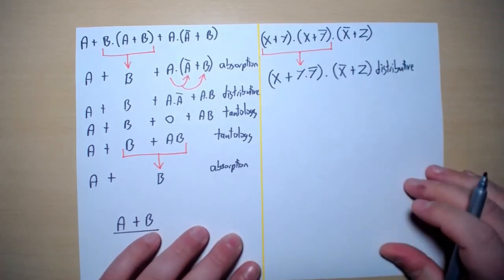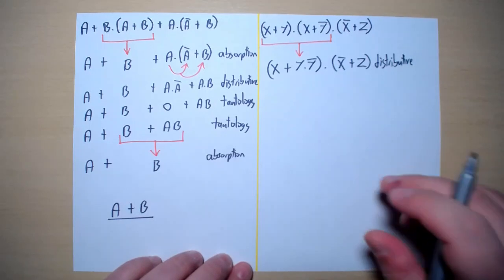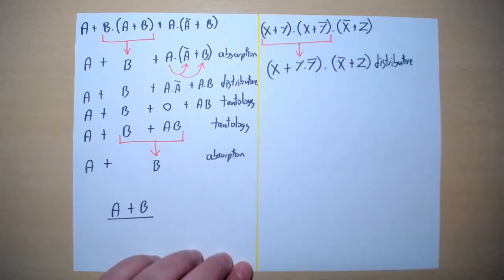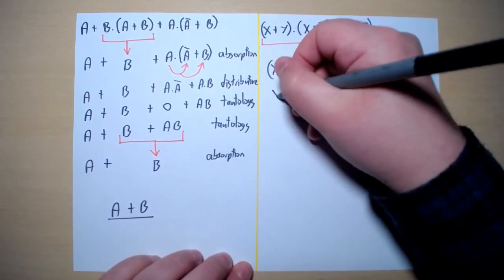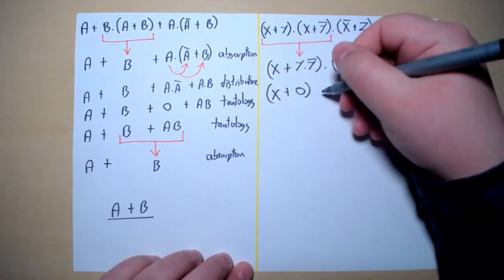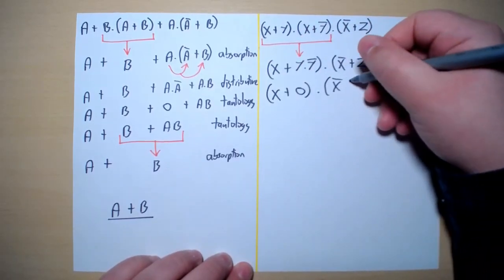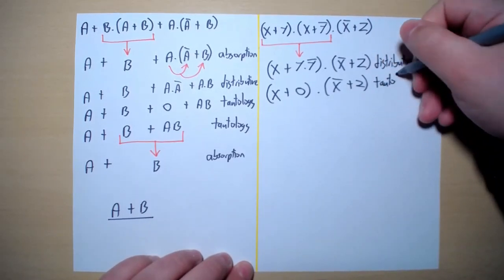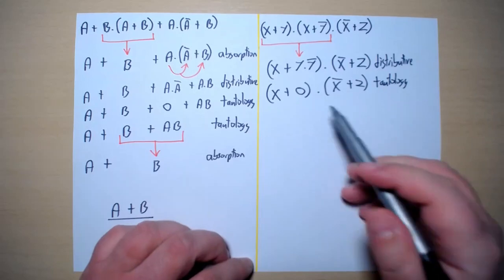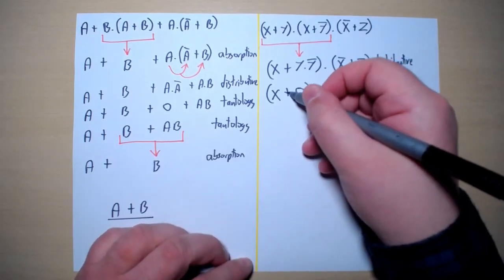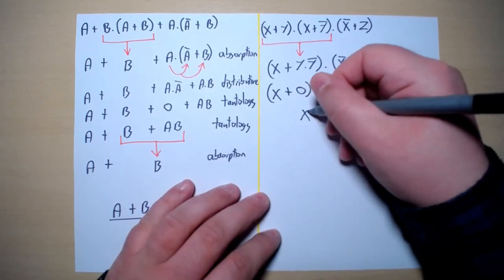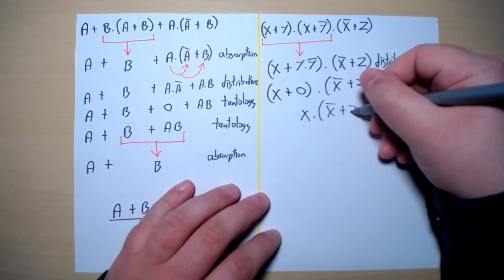Therefore, using this distributive law, it becomes X or Y and Y-naught, into X-naught or Z. Using the tautology law, Y and Y-naught gives zero, so we get X or zero into X-naught or Z. Using tautology, X or zero becomes X, so now we have X into X-naught or Z.